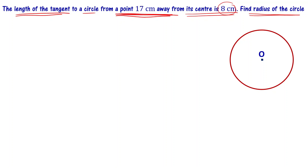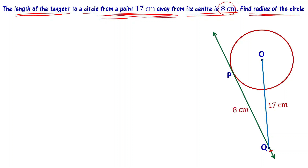Now, I want to mark a point 17 centimeters away from the center of the circle. This is centered at O. From Q, I want to draw a tangent to the circle. Let's call the point of tangency P and A.